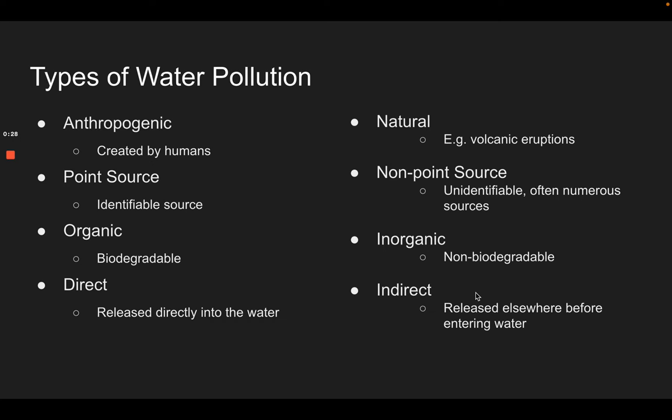Compare that to a non-direct source — say if you spray your crops and then it rains and those pesticides go into the ecosystem. Some natural sources include volcanic eruptions or mudslides, which could affect turbidity. Non-point source pollution is a huge problem — think about your car dripping oil, which is another indirect source.